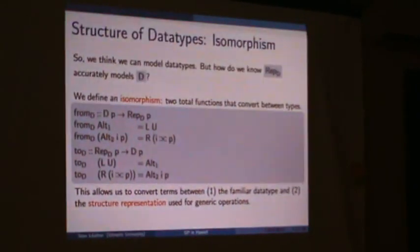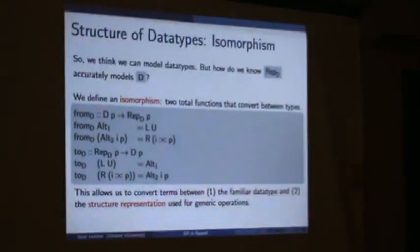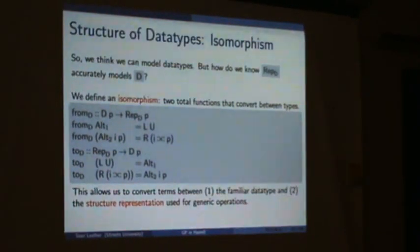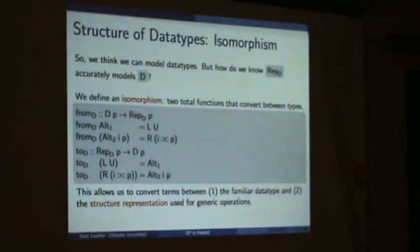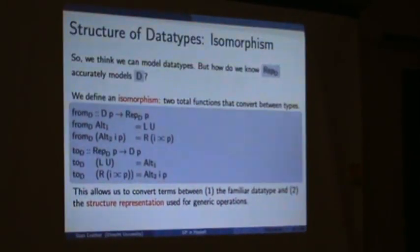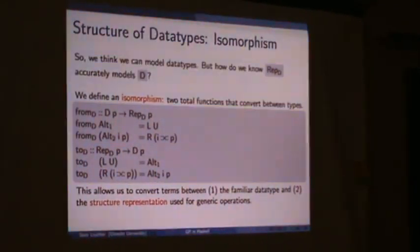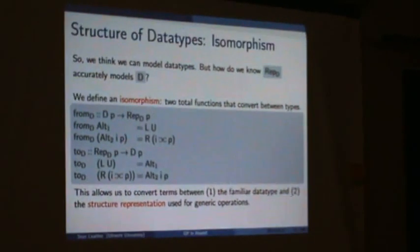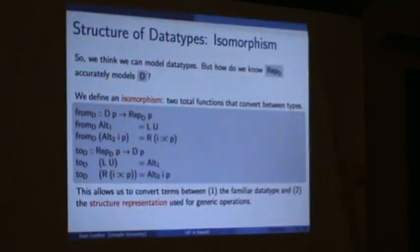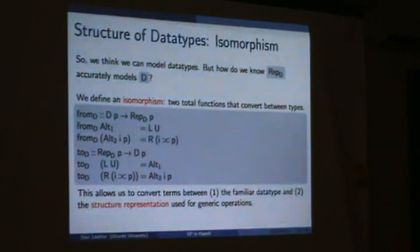This isomorphism is essentially a proof that these two types are equal — like what you'd write in discrete mathematics or logic. It also serves the practical purpose of converting between the familiar data type and the structure representation. As a generic programming library author, you don't expect users to write the structure representation type themselves — they want to work in their own world of data types — so we need to convert back and forth to use generic functions.